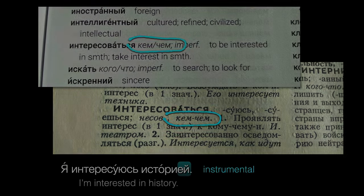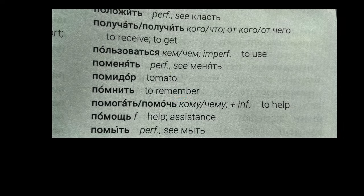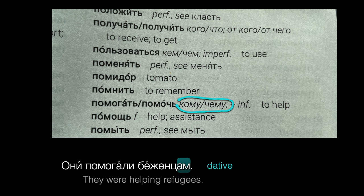And here, we see КОМУ, ЧЕМУ — the dative forms of КТО and ЧТО — so we know that ПОМОГАТЬ, ПОМОЧЬ is used with the dative. In other words, it governs the dative case. Они помогали беженцам.